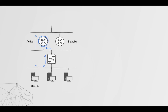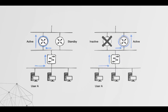FHRPs are more of a high-availability mechanism. User A's traffic traverses through a switch and goes through an active router. That active and standby router form a logical group within HSRP or VRRP, with a priority assigned. There's also a virtual MAC address assigned to the group, so if the active device fails, that virtual MAC address switches to the other device and traffic is routed without the user knowing anything happened.